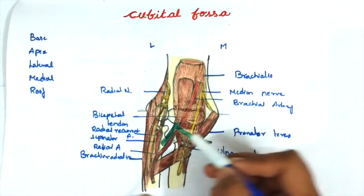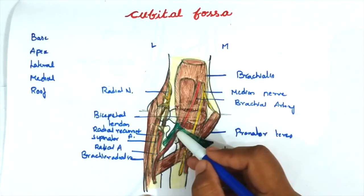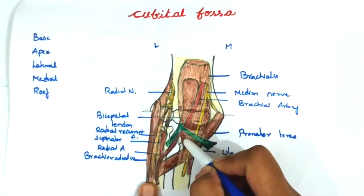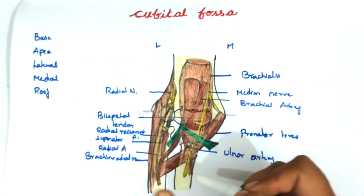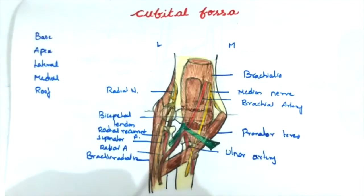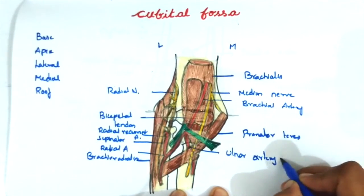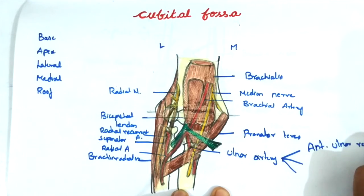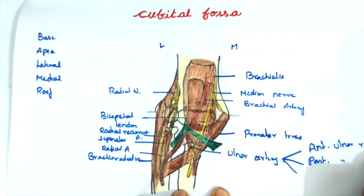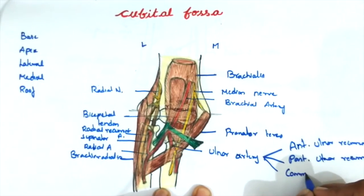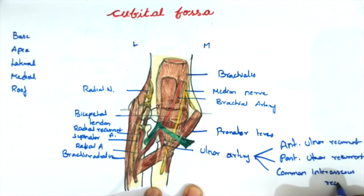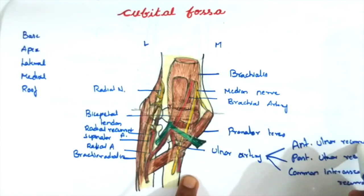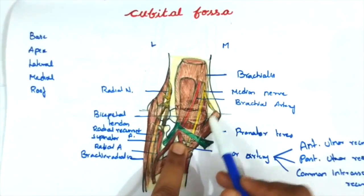The ulnar artery is the largest terminal branch. Within the cubital fossa, it gives three branches: the anterior ulnar recurrent, the posterior ulnar recurrent, and the common interosseous artery. The anterior ulnar recurrent artery makes an anastomosis with the inferior ulnar collateral artery, which is a branch of the brachial artery.